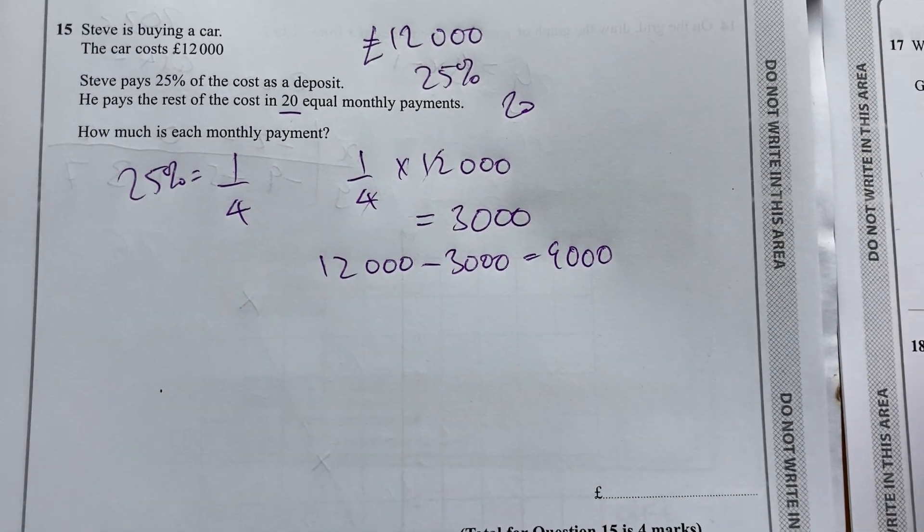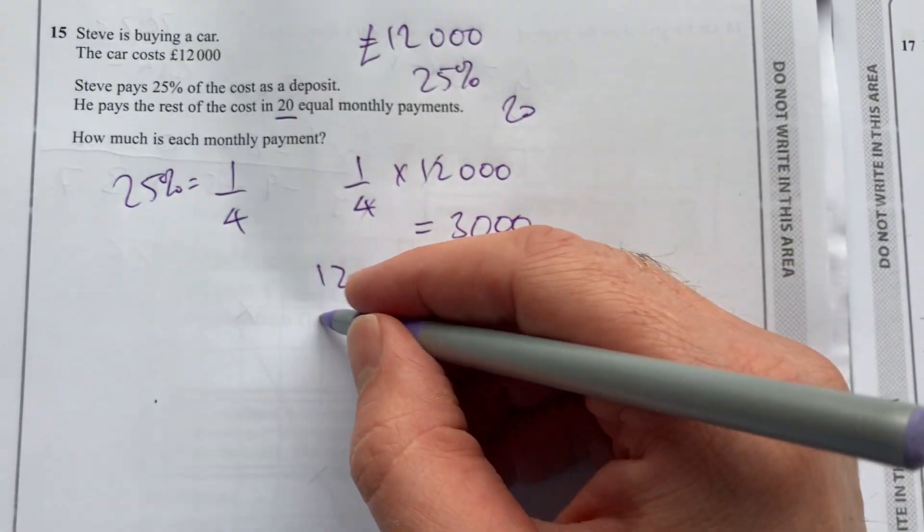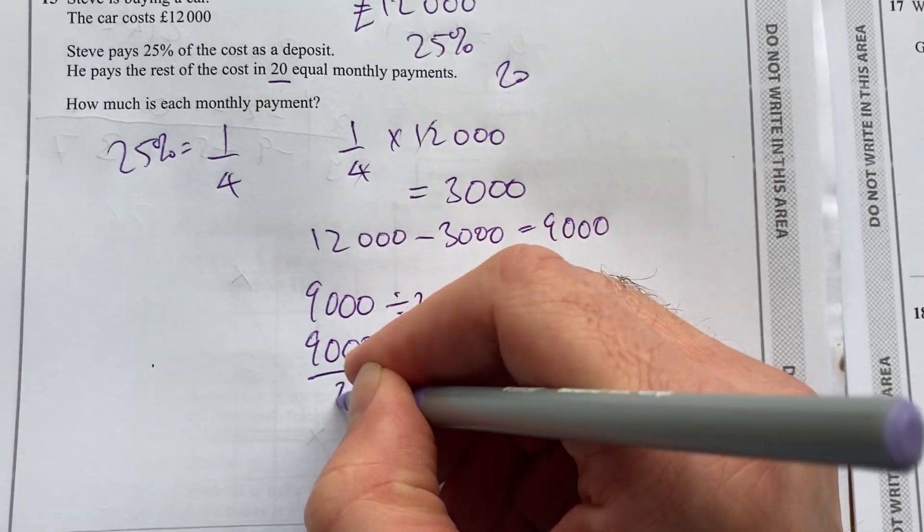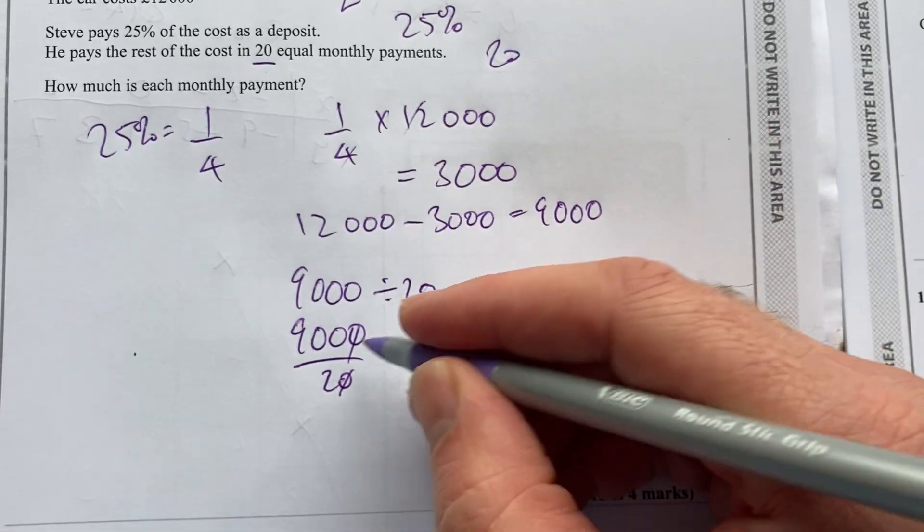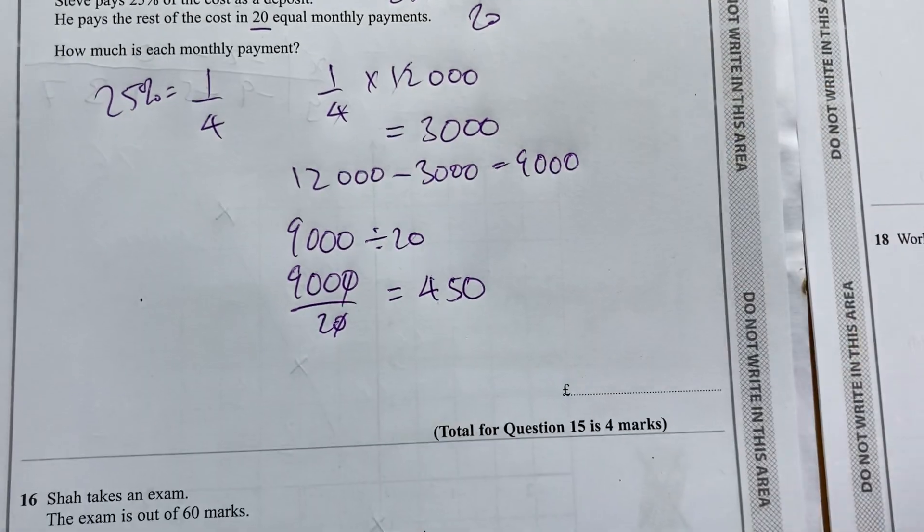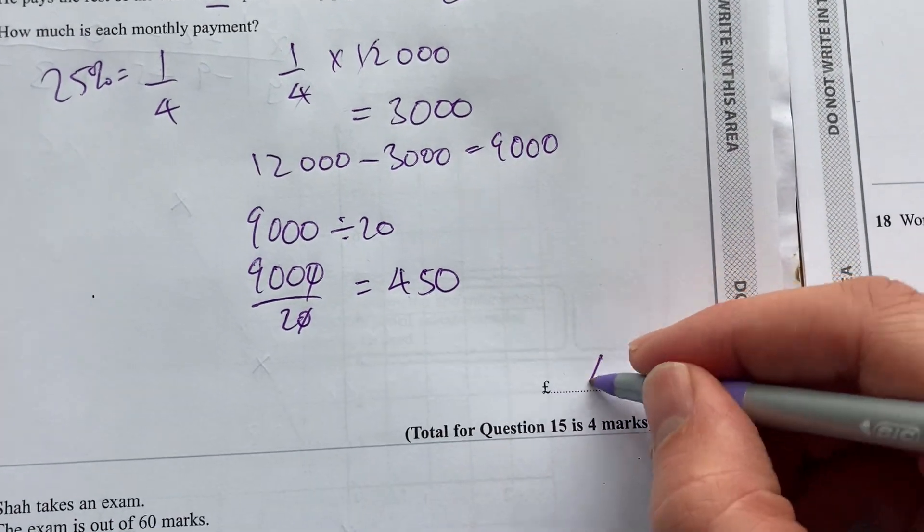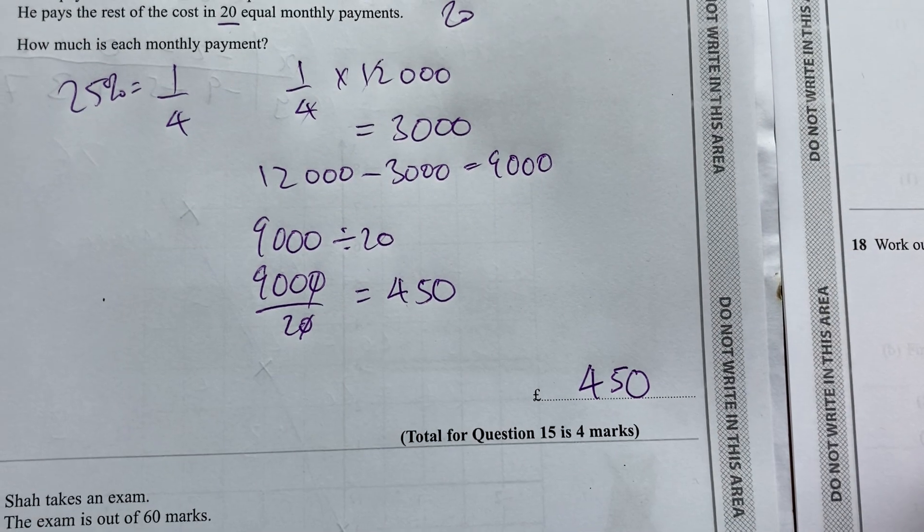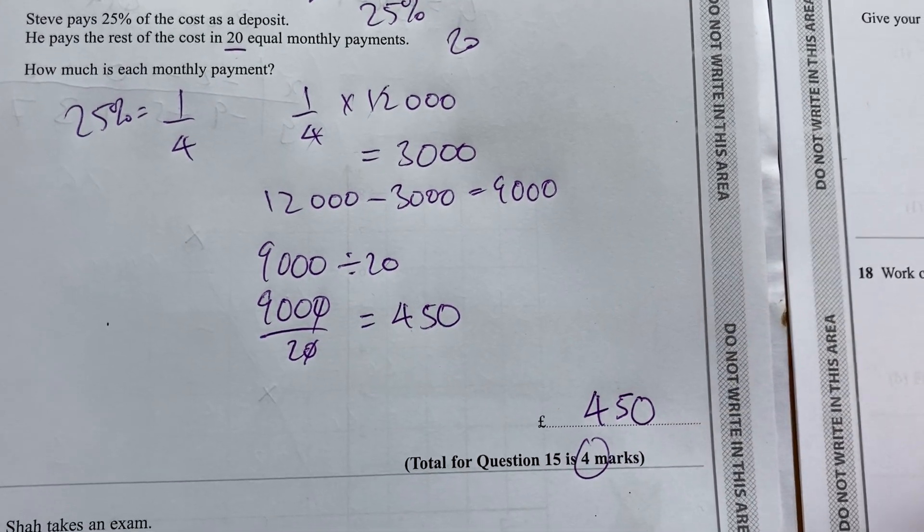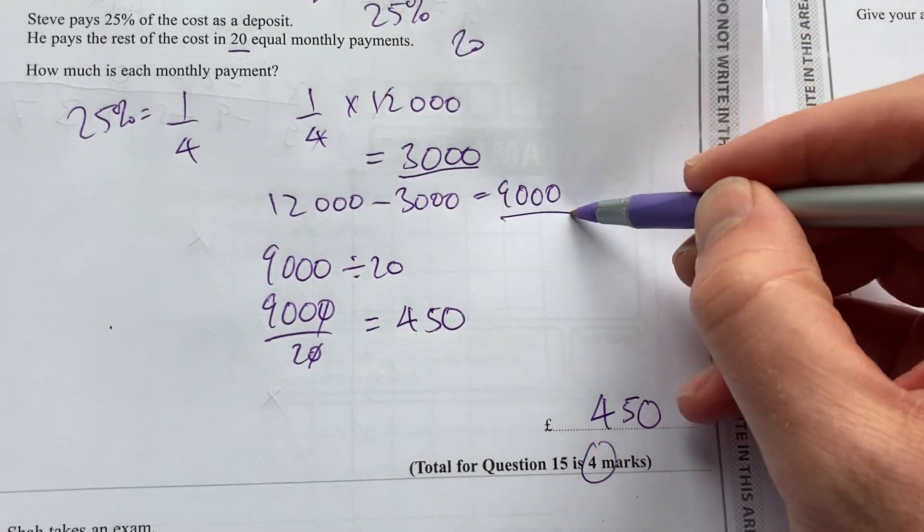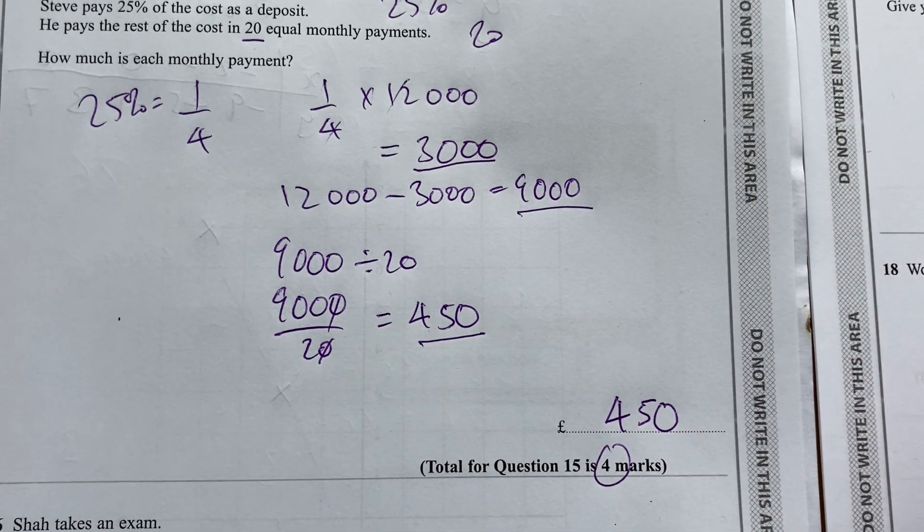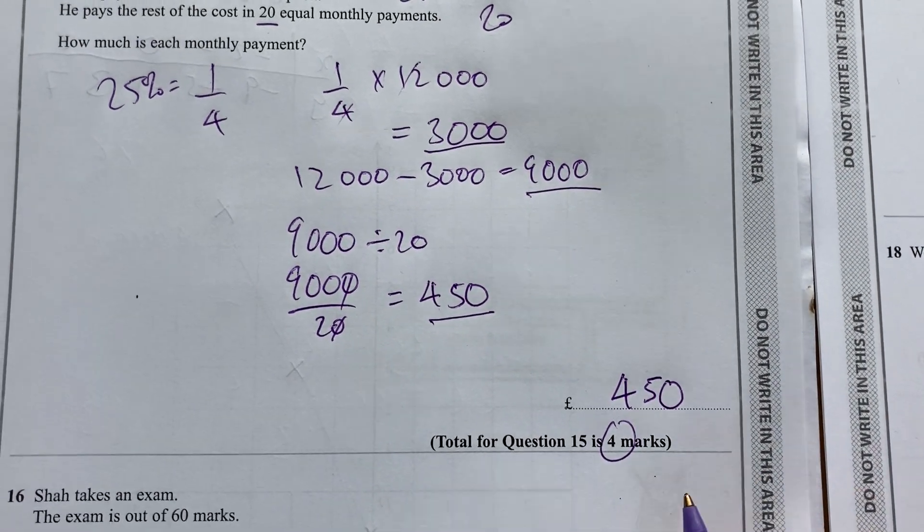So 9,000 is going to be divided into 20 equal installments. We'll do that as a fraction because it's a non-calculator paper. So 900 divided by 2. I know 9 divided by 2 is 4.5, so it'll be 450. So each of those 20 payments will be £450. Okay, that's four marks because there's a lot of steps there. You have to find a quarter of 12,000. You have to find the amount that's left and then divide those into 20 equal parts. Okay, that's question 15.